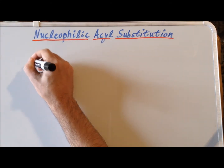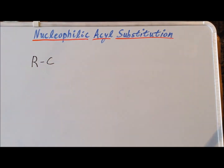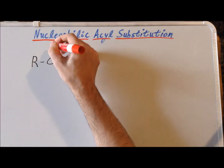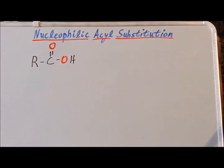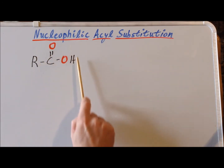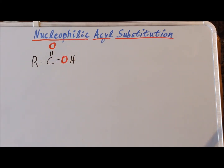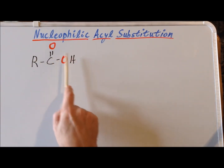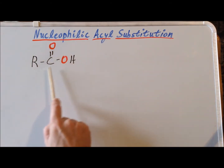Recall that a carboxylic acid has the general structure where we have a carbonyl group attached to an aliphatic group R and attached to a hydroxyl group. This combination of the carbonyl group and the hydroxyl group has special properties and we name it as one combined group, which we call a carboxyl group. Also, when we have a carbonyl attached directly to an aliphatic group but then to certain other groups on the right-hand side, we refer to this as an acyl group.